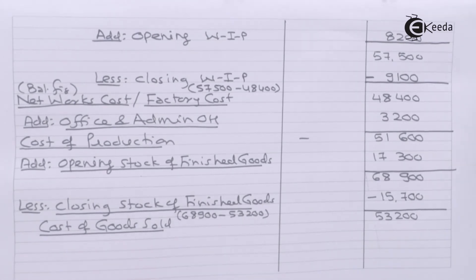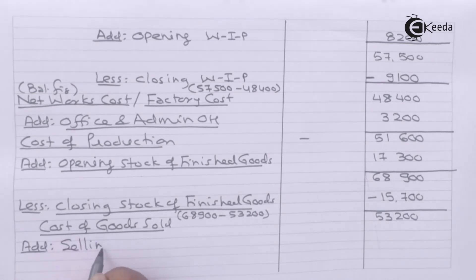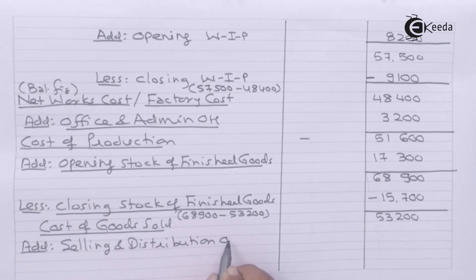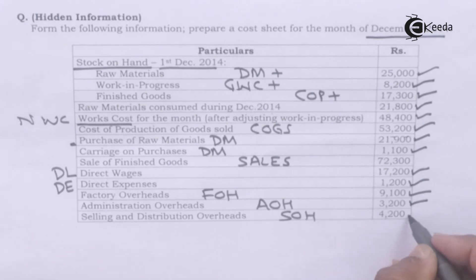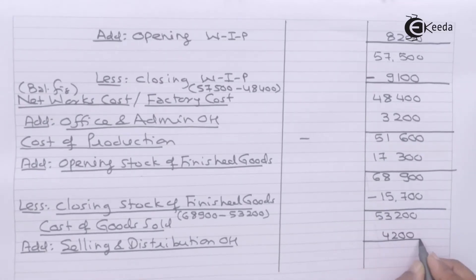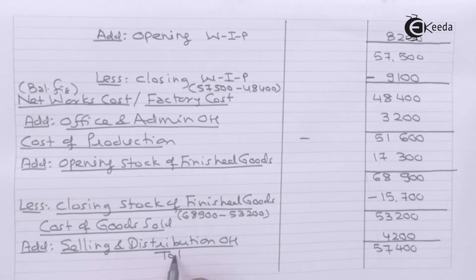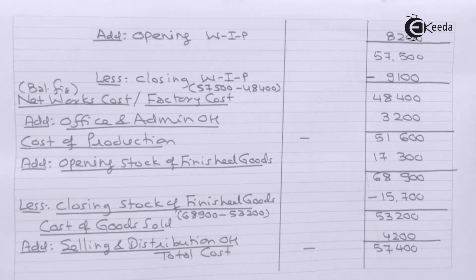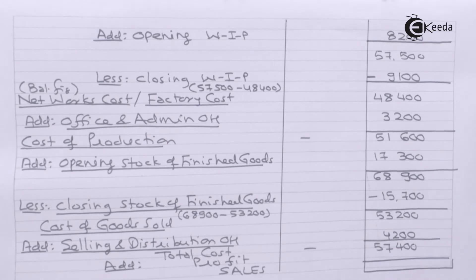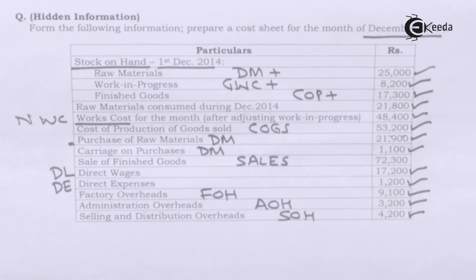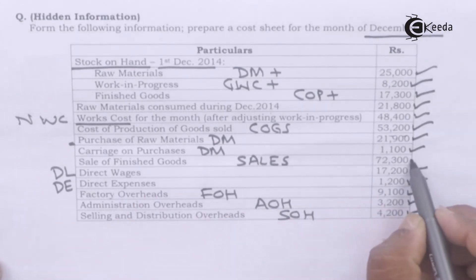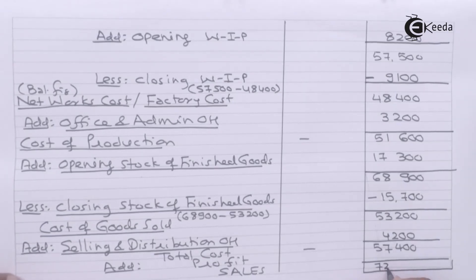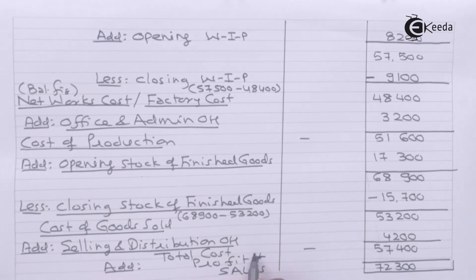To the amount of cost of goods sold we are required to add selling and distribution overheads of 4,200. Total cost comes to 57,400. To this we add profit to finally arrive at the figure of sales. Sales of finished goods is given in the question as 72,300. We can now get profit as a balancing figure: 14,900.